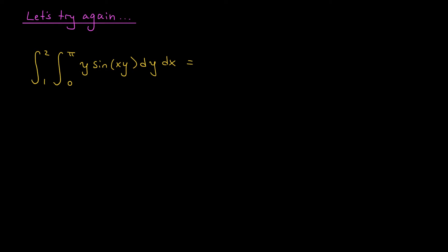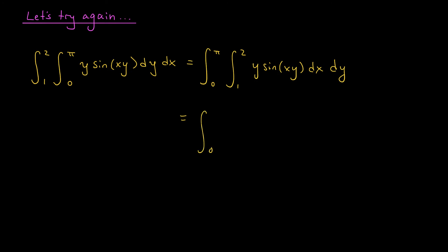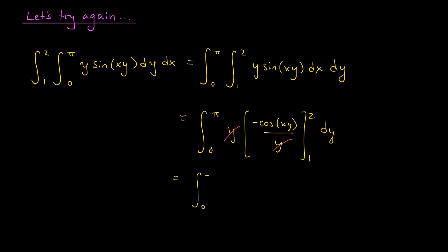Instead, I'll solve this integral by switching the order of integration. The inner integral with respect to y forced us to use integration by parts, making everything complicated. Since we're integrating over a rectangle, we can switch the order freely. I'll rewrite this as the integral from 0 to pi of the integral from 1 to 2 of y sine(xy) dx dy. Now we're integrating with respect to x first, and y sine(xy) is not a product of two functions of x alone — so no integration by parts is needed. The antiderivative of sine(xy) with respect to x is minus cos(xy) over y. Putting it together: the integral from 0 to pi of y times minus cos(xy) over y. The y in front cancels with the y in the denominator, and substituting x equals 1 and x equals 2 gives the integral from 0 to pi of minus cos(2y) plus cos(y) dy.